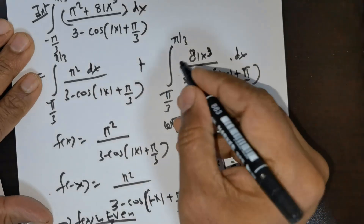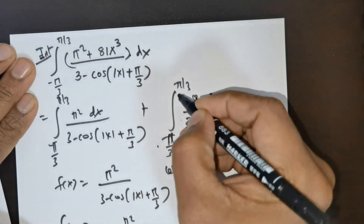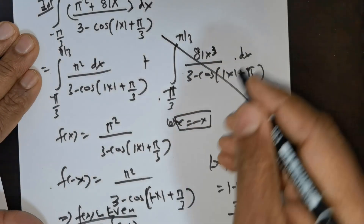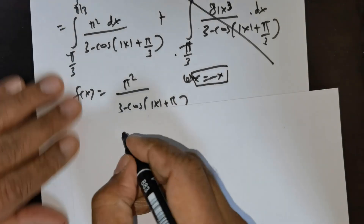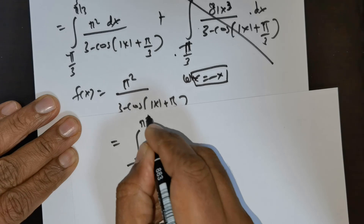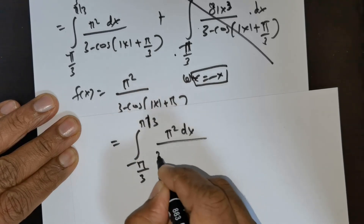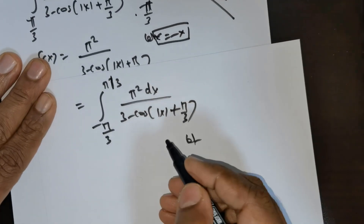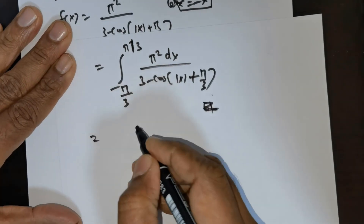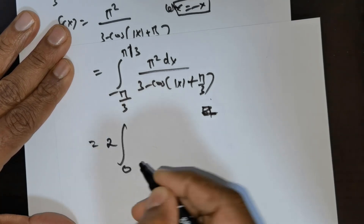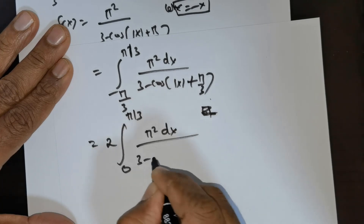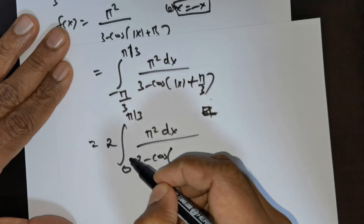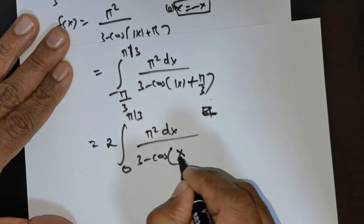In the case of an odd function, integrating from -π/3 to π/3 gives zero — so that term vanishes. All we need to do is integrate the remaining term. This is the integral from -π/3 to π/3 of π² dx divided by 3 - cos(|x| + π/3). Since f(x) is even, I can rewrite this as 2 times the integral from 0 to π/3 of π² dx divided by 3 - cos(x + π/3), since x > 0 means |x| = x.